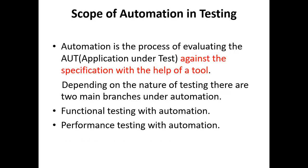Next topic is scope of automation. Automation is the process of evaluating the application under test (AUT) against the specifications with the help of a tool. Depending on the nature of testing, there are two main branches under automation: functional testing with automation and performance testing with automation.